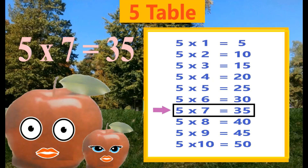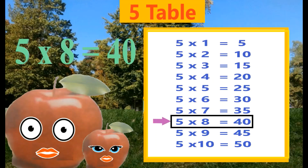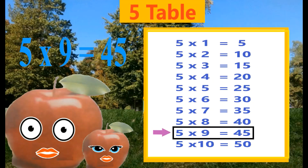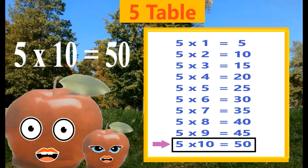Five eights are forty. Five nines are forty-five. Five tens are fifty.